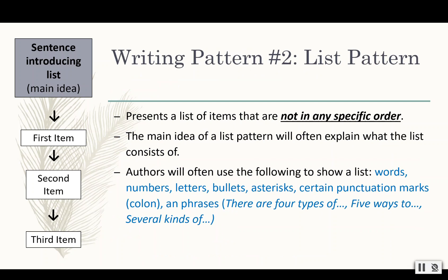A list pattern presents a list of items that are not in any specific order. I always think of a grocery list like this. Sometimes I can organize a grocery list by the first things I'm going to get in the store — when I walk in, produce is going to be there, then the meat section, then tortillas, coffee, and candy.